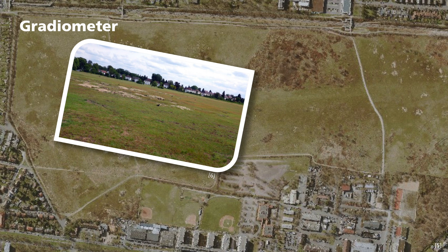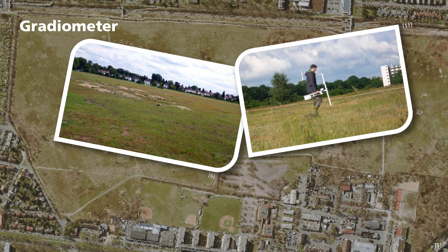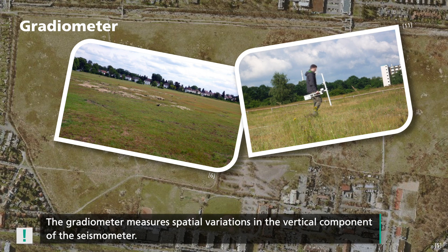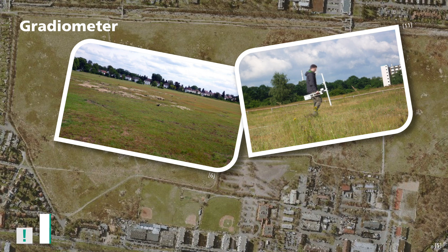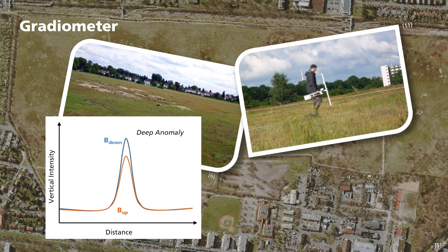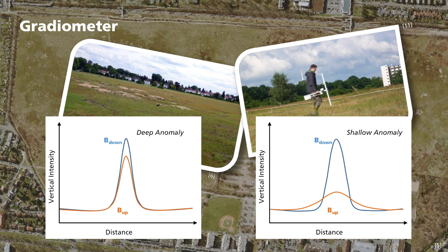The last instrument I would like to introduce to you is the gradiometer. This contains two fluxgate magnetometers, each comprising three sensors in the three spatial directions. The two instruments are arranged vertically with one above the other. In this way, variations in a vertical component of the magnetic field can now be measured. A magnetic anomaly deep in the earth produces very similar values at the top and bottom sensors, meaning that the difference is only small. This difference is greater, however, with near-surface anomalies.